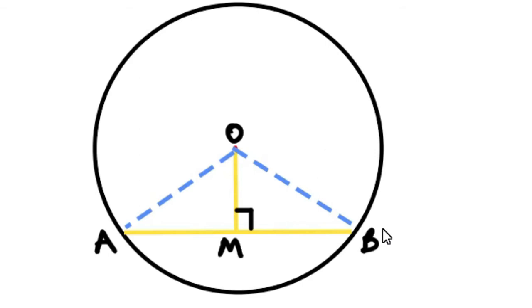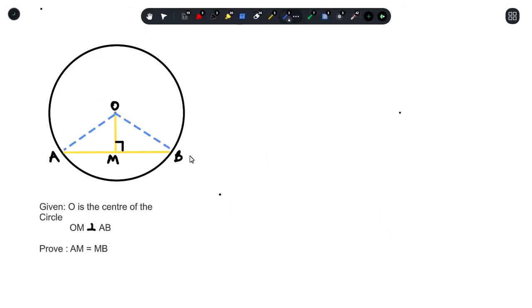Now with those two triangles, that can help us prove that AM is equal to MB. So we're working with triangle OMA and triangle OMB. So the goal of this proof is to prove that OMA is congruent to triangle OMB.